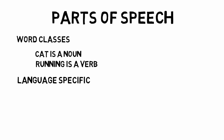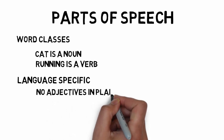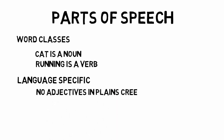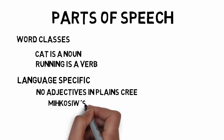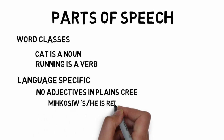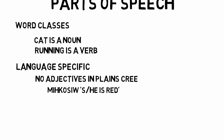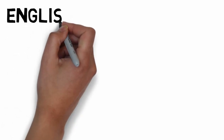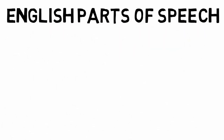For example, Plains Cree just doesn't have adjectives. Instead, verbs are used. So a word like 'mikoso' means 'she or he is red,' rather than just having 'red' as an adjective. For this course, we are going to focus only on English parts of speech. English has nine broadly recognized parts of speech.